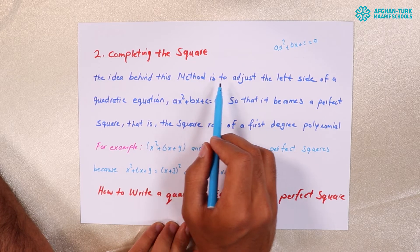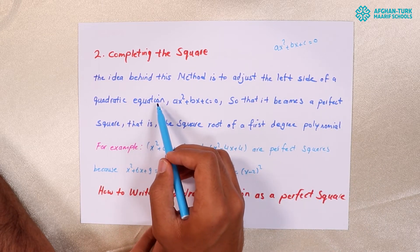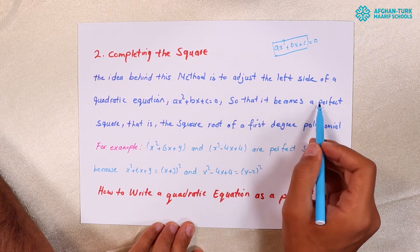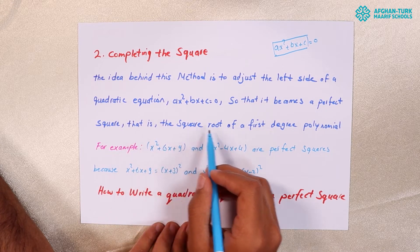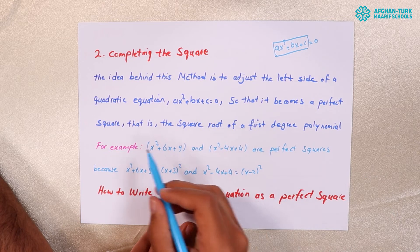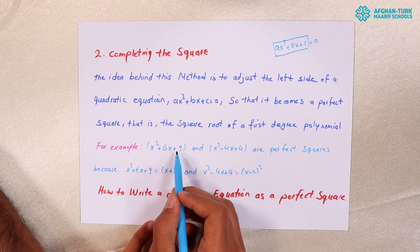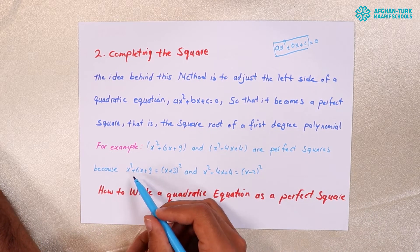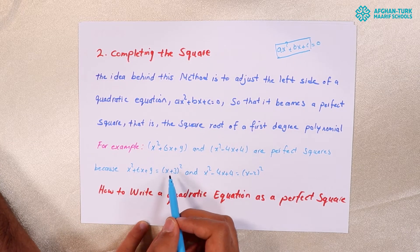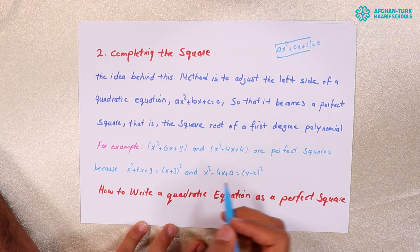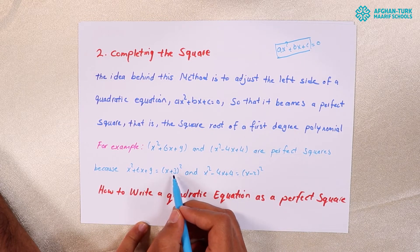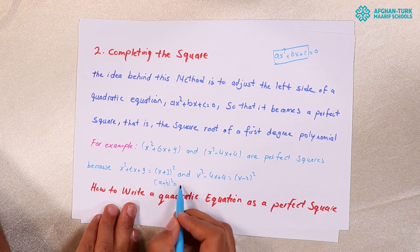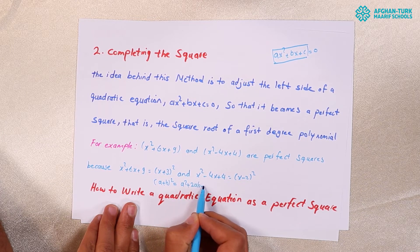The idea behind this method is to adjust the left side of a quadratic equation so that it becomes a perfect square — that is, the square of a first-degree polynomial. For example, X squared plus 6X plus 9 and X squared minus 4X plus 4 are perfect squares. We studied in previous lessons the expansion of binomials: A plus B to the power of 2 equals A squared plus 2AB plus B squared.